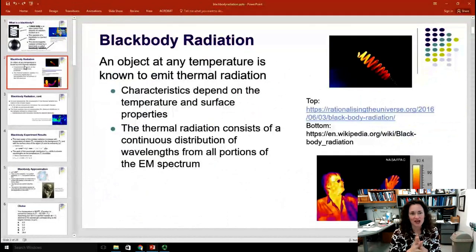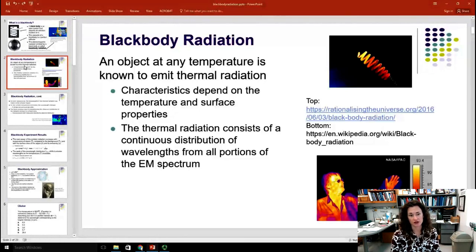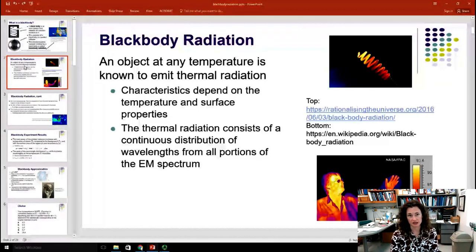As I said, an object at any temperature is known to emit thermal radiation, and the characteristics depend upon the temperature and the surface properties. The thermal radiation curve is actually a continuous distribution of wavelengths from all portions of the electromagnetic spectrum.